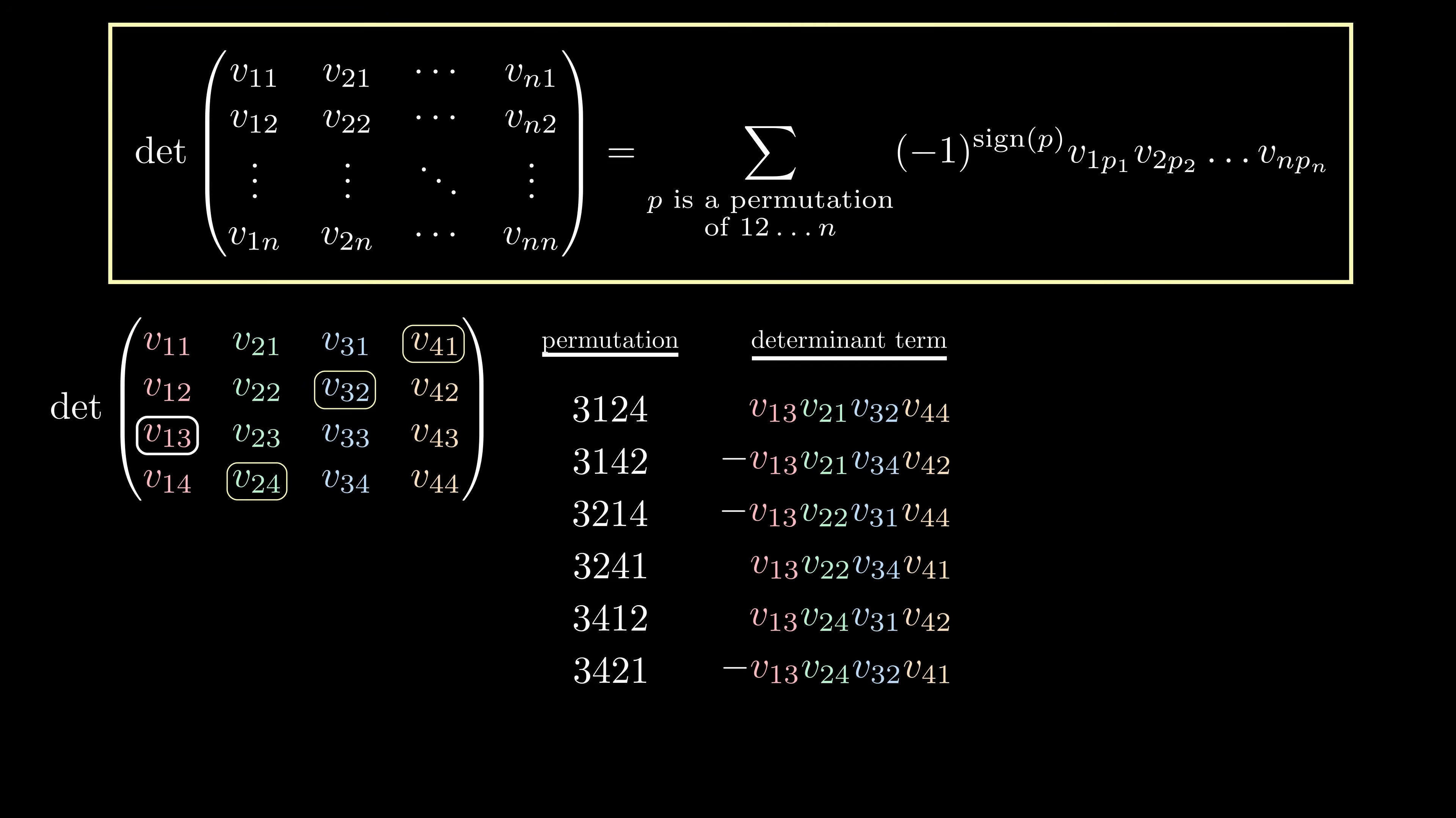Notice how the entry we chose from the first column blocks off the first column and third row. So the 6 terms come from permuting the entries of the matrix that arises from deleting the first column and third row.